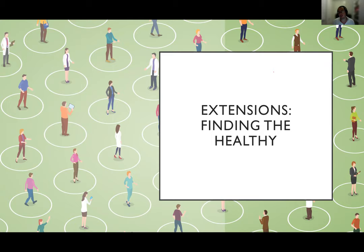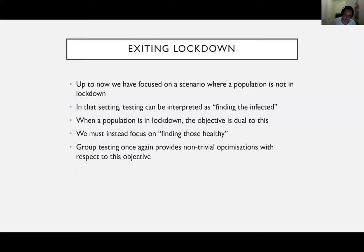I'd like to talk about extensions we're currently working on, encapsulated by the term 'finding the healthy.' Up until now we've focused on a scenario where the population is not in lockdown — they continue as normal and we try to find the infected. But when in lockdown, the objective is actually dual: we also need to try and find those who are healthy so they can continue with normal activities. This provides a non-trivial optimization perspective for group testing as well.